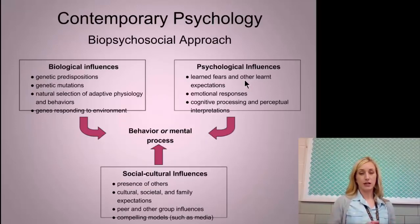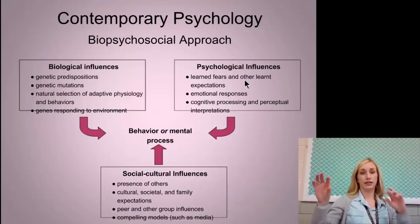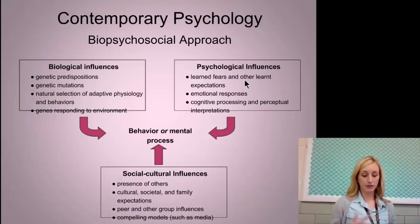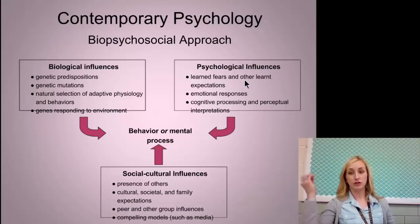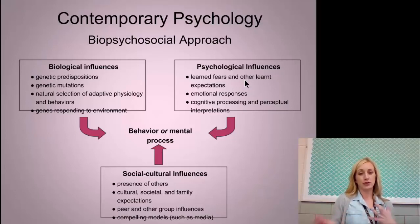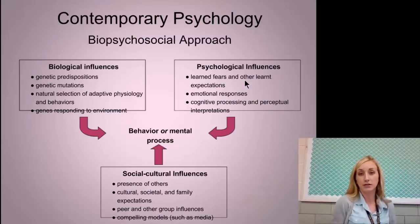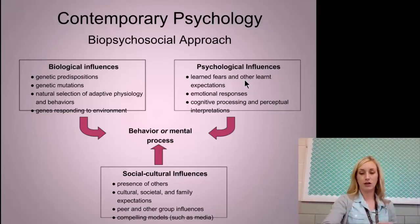Contemporary psychology takes the biopsychosocial approach, taking all three parts: biological, psychological, and social. The biological influences are the genetic ones — looking at all mental and behavioral processes through genetics, mutations, and natural selection. The psychological component includes learned fears, learned expectations, and cognitive processes, meaning thinking. Social culture covers the presence of others — how our culture, society, family, peers, and compelling models such as the media influence our behavior or mental processes.